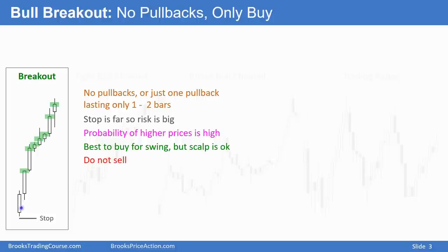On a smaller timeframe chart, there are pullbacks and channels. And on a small enough timeframe chart, there might even be broad channels and certainly trading ranges. So for example, if this is a daily chart and you look at a five-minute chart, there may even be some bear trends within it. For example, this tail on the top of a bar on the daily chart was probably caused by a trend down on the five-minute chart.